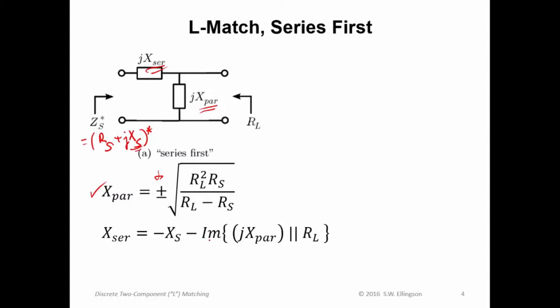To get the series reactance, this one up here, you simply evaluate this expression: minus X sub S minus the imaginary part of J times X sub par in parallel with R sub L. Now remember what it means to be in parallel. That means J X sub par R sub L over J X sub par plus R sub L. That's the parallel impedance formed by those two impedances. I strongly recommend that you independently derive these equations. It's not hard at all.